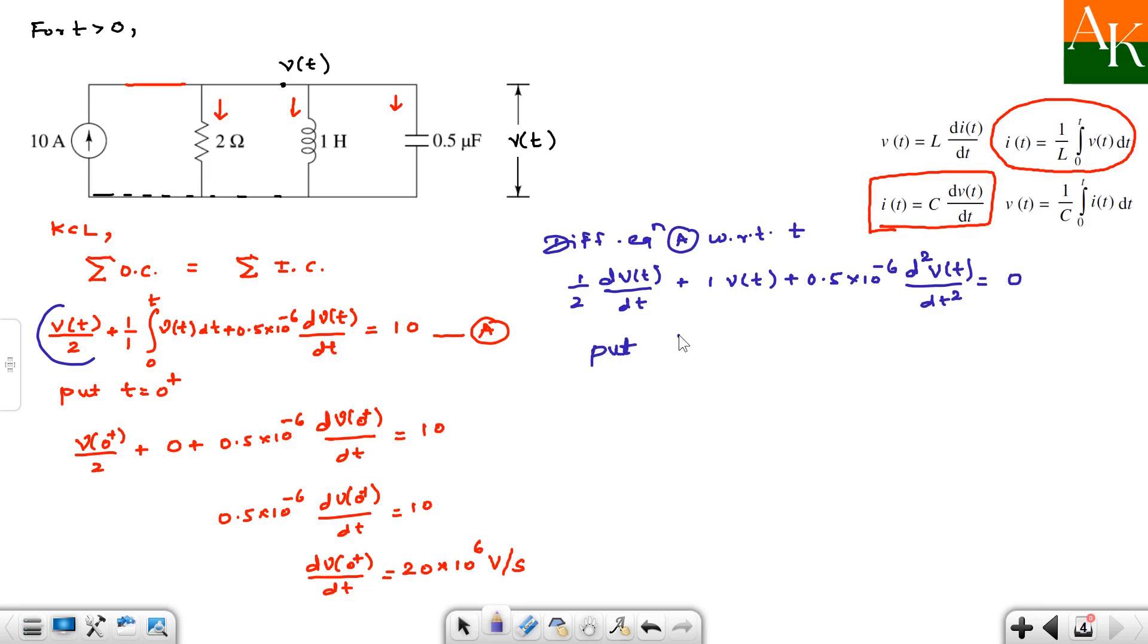Now you have to substitute t value. So put t equals 0 plus. So this will become half dV 0 plus by dt, whose value you know. This becomes 0. So I'll directly write d²V 0 plus by dt². This comes here. This minus half goes there. And dV 0 plus by dt value was 20 into 10 to the power 6. And d²V 0 plus by dt² has coefficient 0.5 into 10 to the power minus 6. So that goes to denominator, 0.5 into 10 to the power minus 6. So this turns out to be minus 20 because 2 into 0.5 is 1, minus 20 into 10 to the power 12 volt per second square.